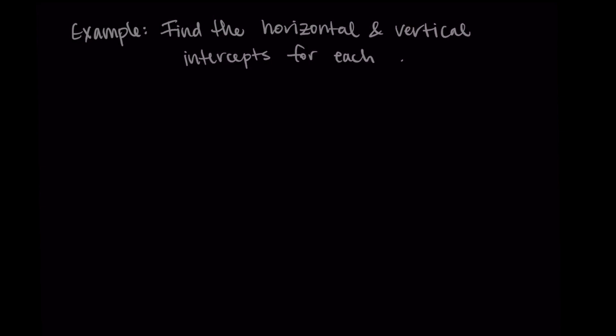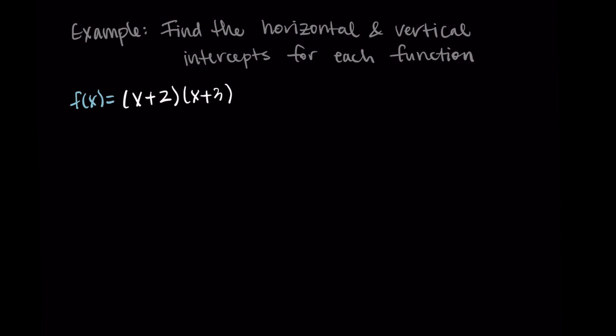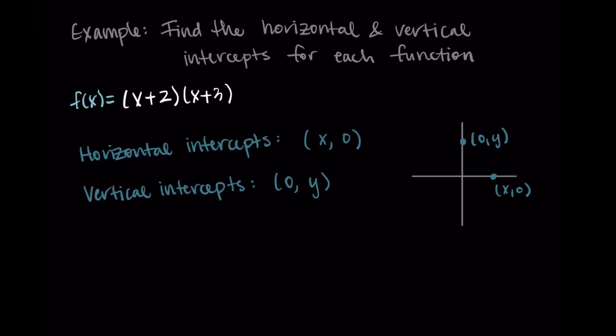For each of these functions we're going to find the horizontal and vertical intercepts. The horizontal intercepts occur at some point (x, 0) — the output value is zero — so to find these we set the function equal to zero. For the vertical intercepts, the input value is zero, so we substitute x equals zero. Let's go through five examples — I'll work through horizontal intercepts, vertical intercepts, and then show the graph.